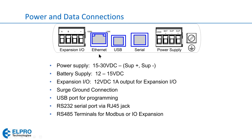Then we have the expansion I/O terminal block A and B. These are the RS-485 connections with plus and minus for powering serial expansion modules. The RS-485 port can be used either for Modbus RTU or for I/O expansion.